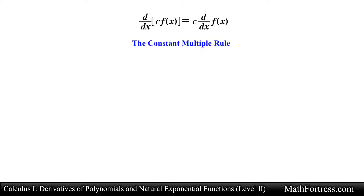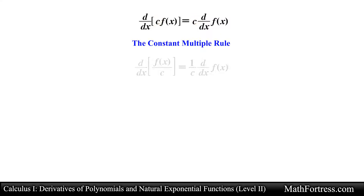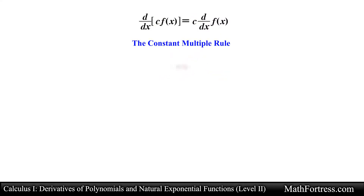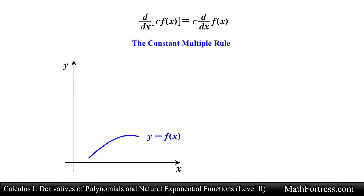Our next differentiation rule is called the Constant Multiple Rule. The derivative of a constant times a function is the constant times the derivative of the function. In other words, constants can be factored out of the differentiation process, even if the constant appears in the denominator. Geometrically we can interpret this rule as follows: say you have a random function y equals f, and then you multiply this function by a factor of 3.